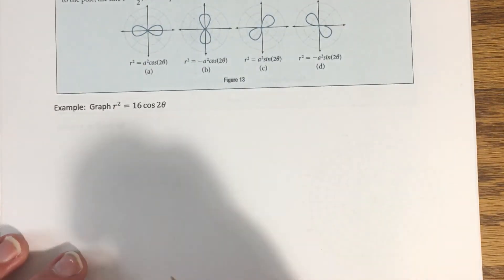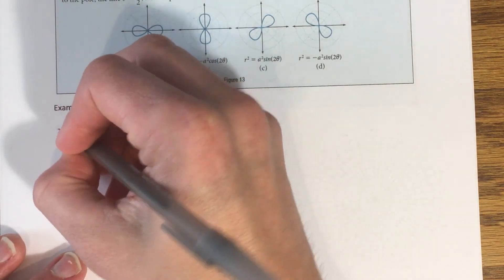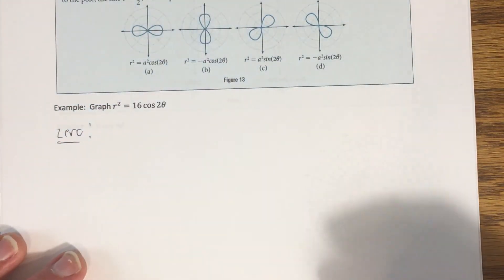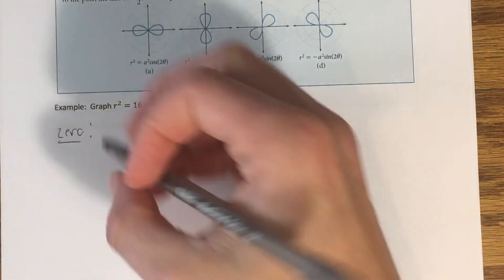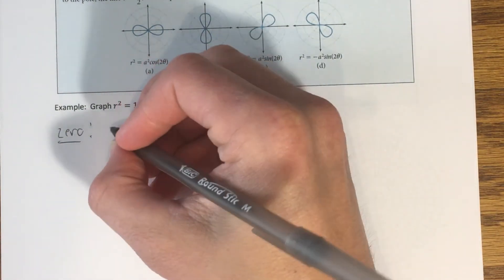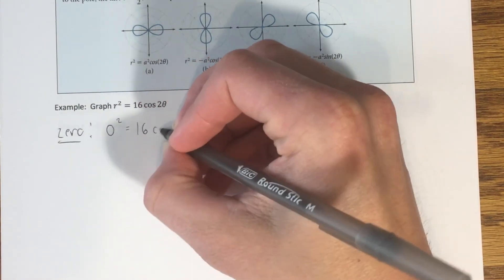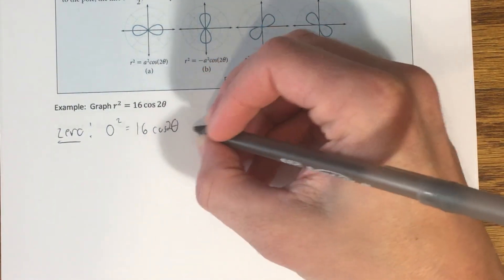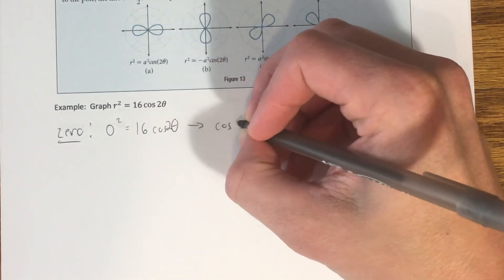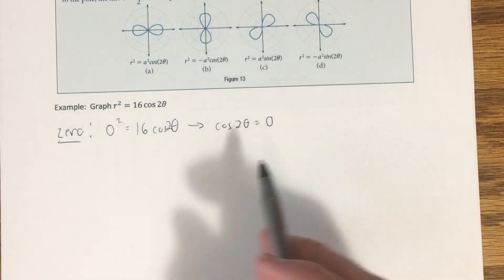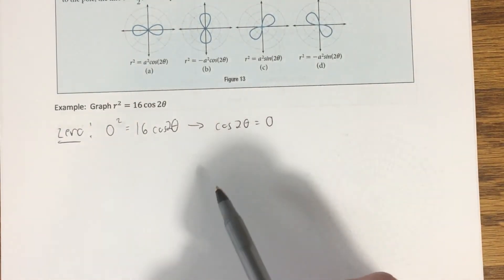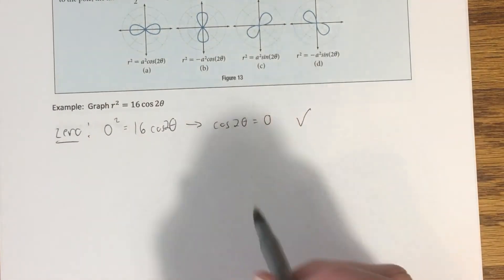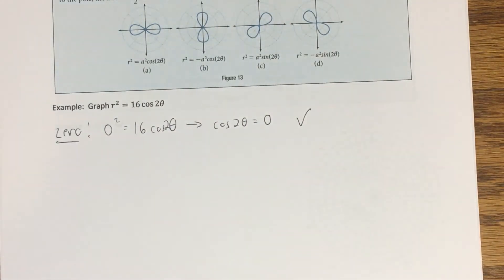Let's confirm the pole is on the graph r² = 16cos(2θ) by plugging in r = 0: 0 = 16cos(2θ), so cos(2θ) = 0. This is easy to solve, but what matters is that a solution exists — zero is between -1 and 1 — confirming the pole belongs to this graph.